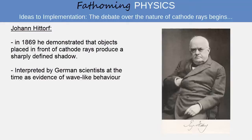In 1869, Johann Hittorf, who was originally a student of Plücker, demonstrated that cathode rays cast sharply defined shadows if an object is placed in their path. At this time, this rectilinear propagation was interpreted by the German scientists working on the problem as evidence that cathode rays must be some kind of electromagnetic wave in the ether.